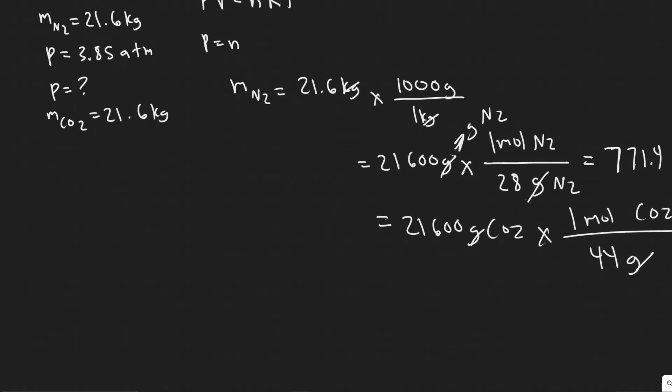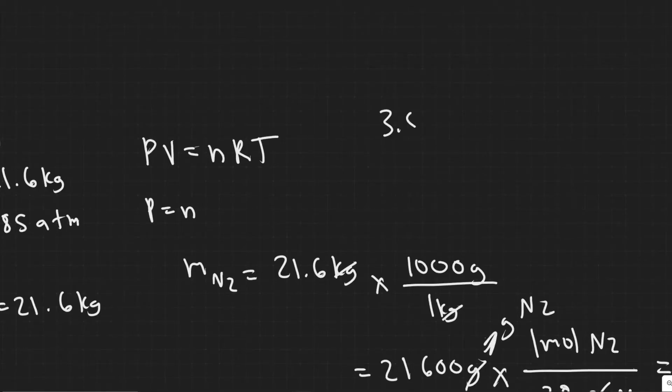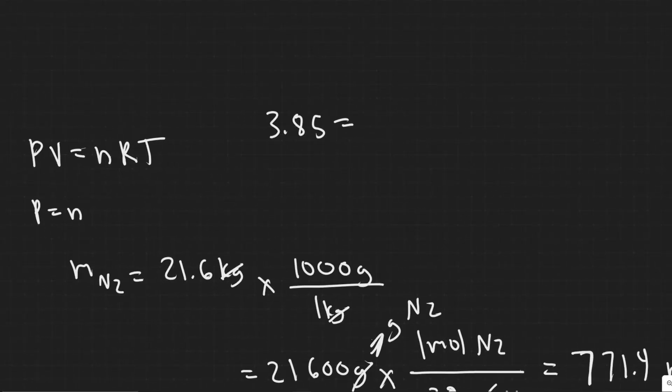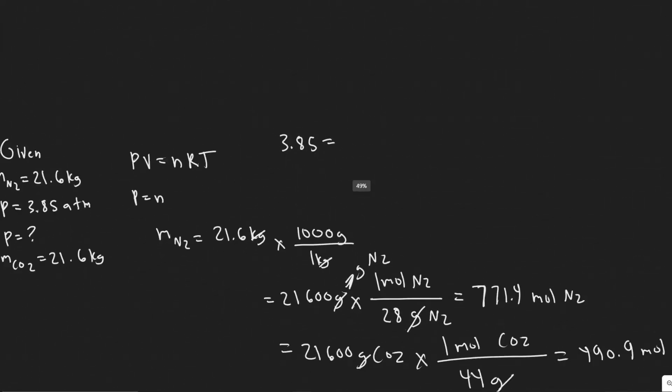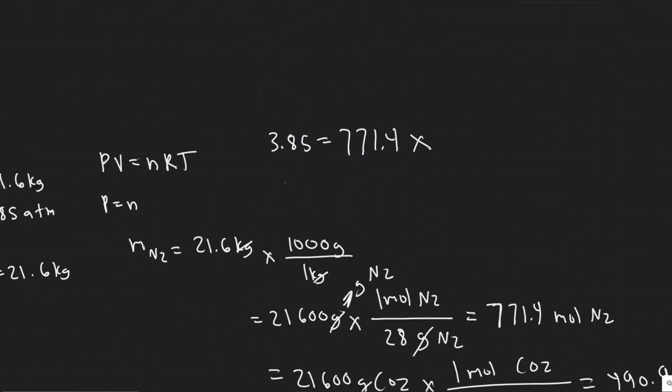And so now, what I want you to see is that we know the pressure is 3.85. V, which is just a constant, so it doesn't really matter, we don't have to write it, is equal to, with a n of 771.4. And then you're basically just imagining that you're multiplying it by some value. And so the 3.85 is based off that.